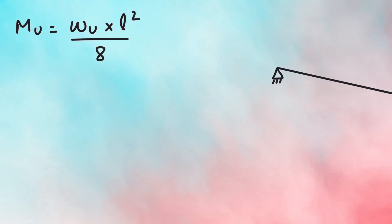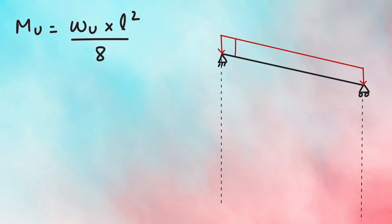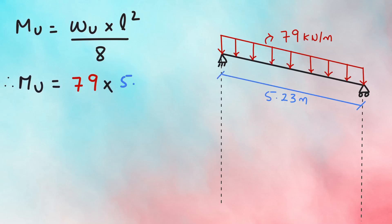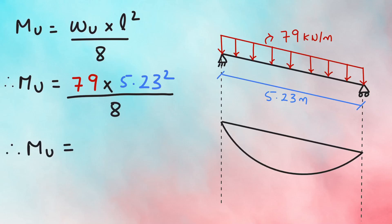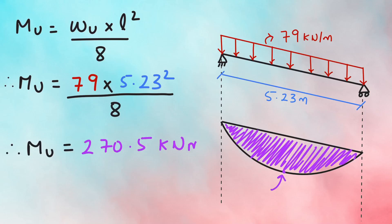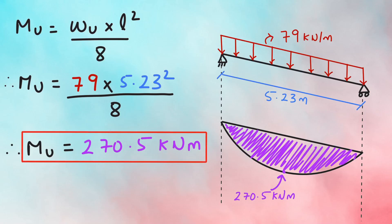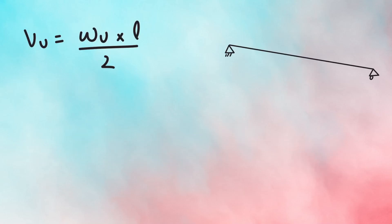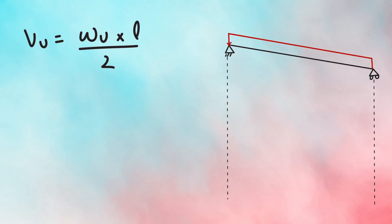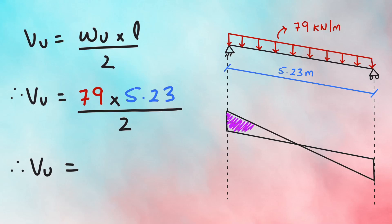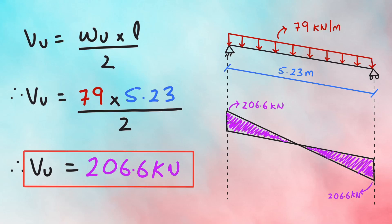To calculate the factored moment, we use the formula WL squared by 8, as the beam is simply supported. Substituting the values of W and effective L gives a moment of 270.5 kN·m. Next, the factored shear force VU is WL by 2. Substituting the values gives a factored shear force of 206.6 kN.